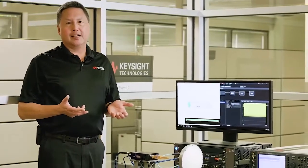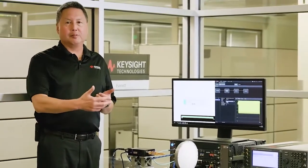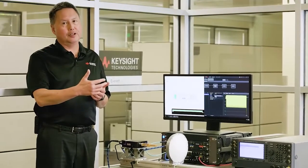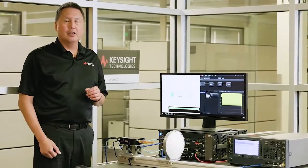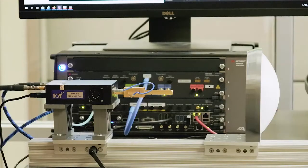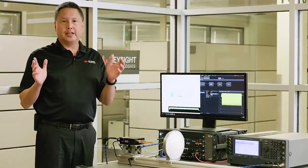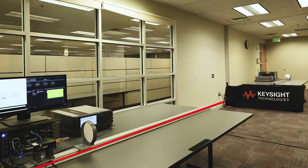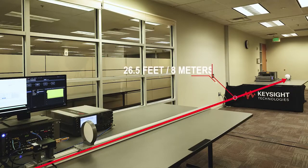So a question we often get asked is, how far can you really transmit a sub-terahertz signal, especially one in the 220 to 330 gigahertz frequency range? So today we're going to show Keysight's 6G testbed being used to transmit a signal centered at 285 gigahertz with 30 gigahertz of bandwidth, and we're going to transmit that over the air across the room, 26 and a half feet or roughly 8 meters.